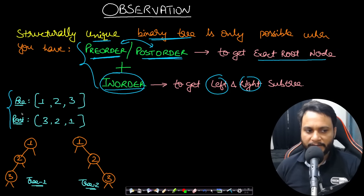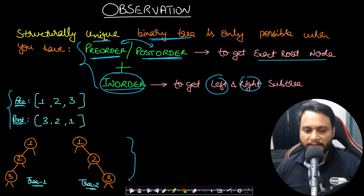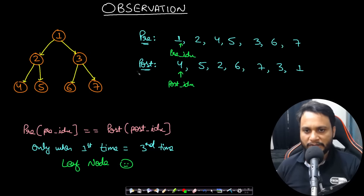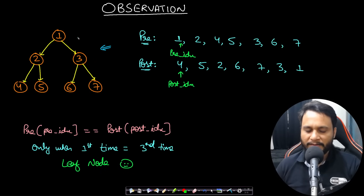For example, consider preorder [1, 2, 3] and postorder [3, 2, 1]. One tree gives preorder 1-2-3 and postorder 3-2-1. A second structurally different tree also gives the same preorder 1-2-3 and postorder 3-2-1. Both trees are structurally different but share the same preorder and postorder, so you can return any of them.